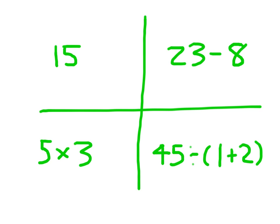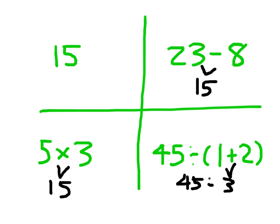In our previous video on expressions, we learned that each of these is an expression because it can either be a single number, like 15 in our upper left-hand corner here, can involve those different operations, or it can even involve parentheses. We also learned that we can simplify those expressions. In each of these cases, it's not an accident that each of these expressions is going to simplify or evaluate to 15. Just a little bit more work on that last one there, but they do all evaluate to 15.